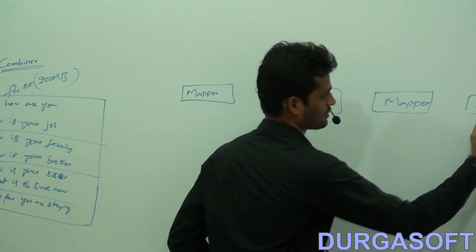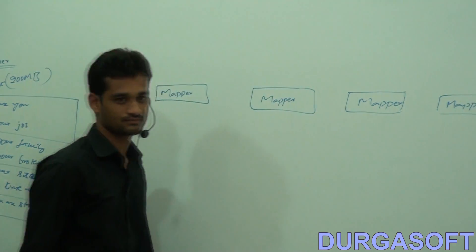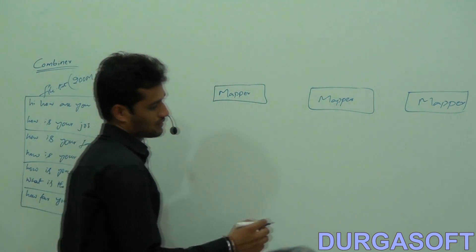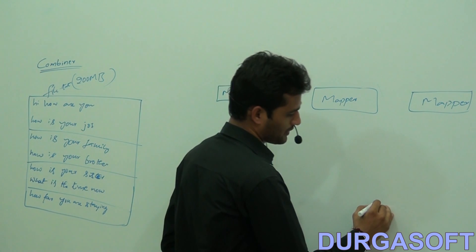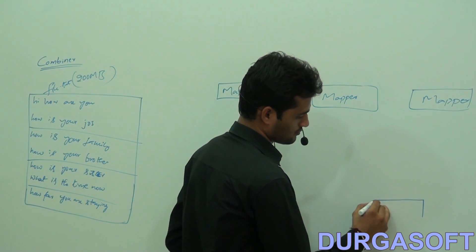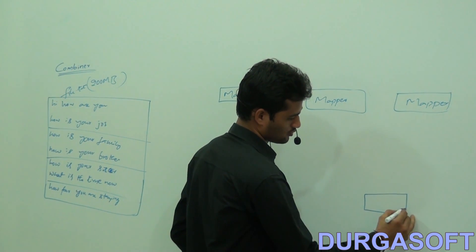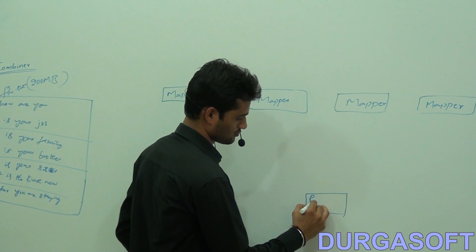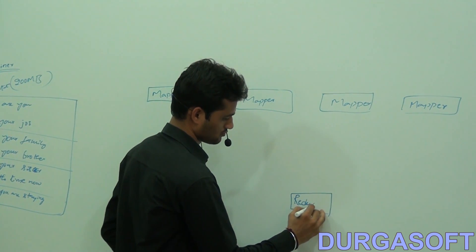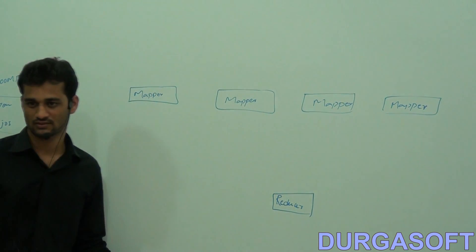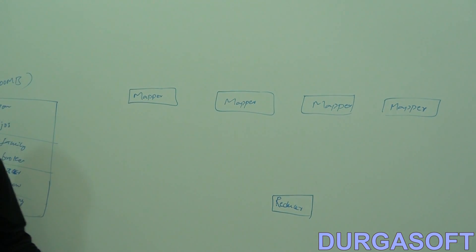You are working with 4 mappers. By default, how many reducers will there be? Only one reducer will be there.